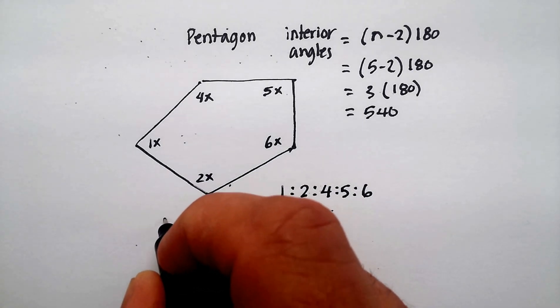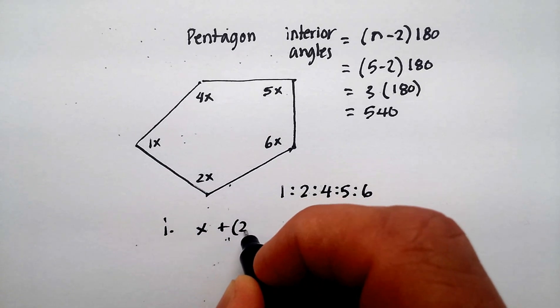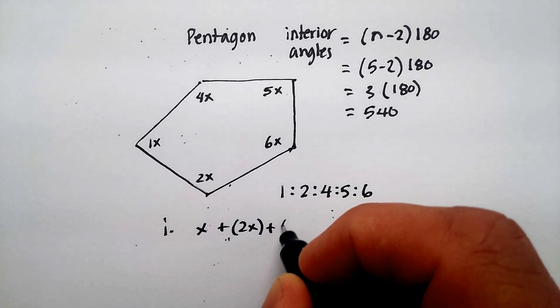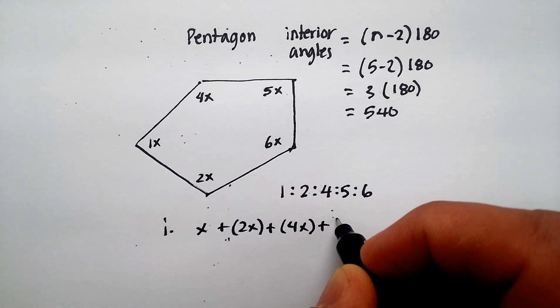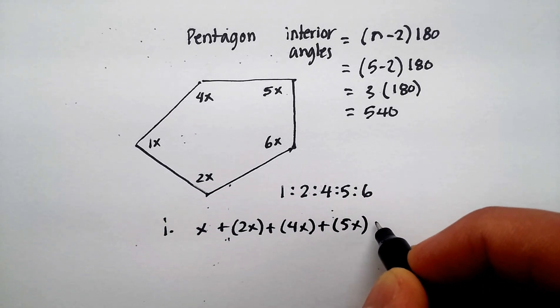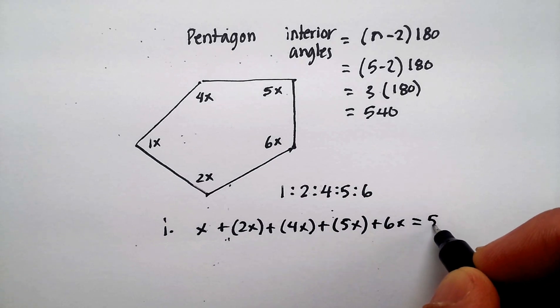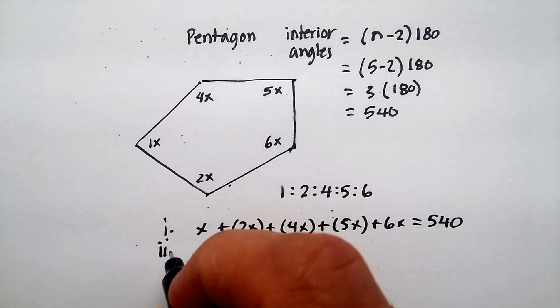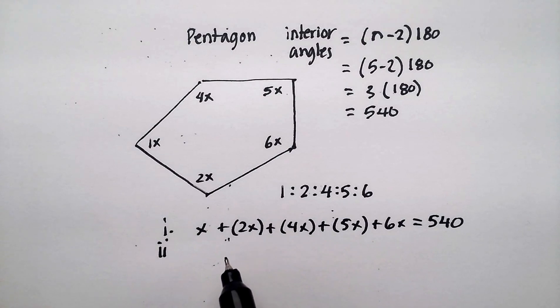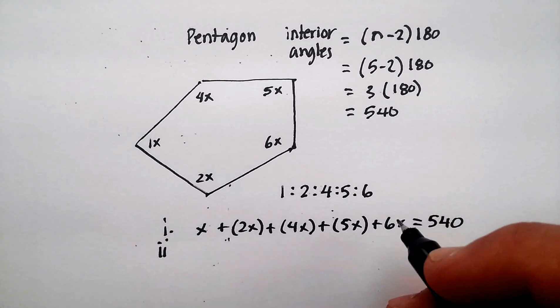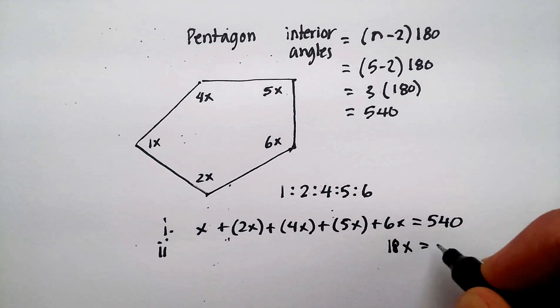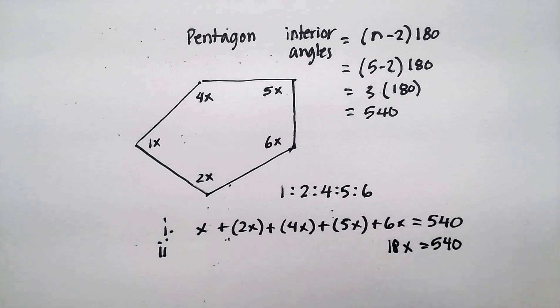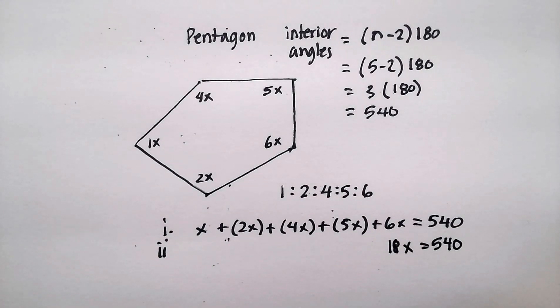So I'd say, first step, x plus 2x plus 4x plus 5x plus 6x is equal to 540. Step 2, let's go ahead and add up all our like terms. It gives me 3, 7, 12, 18. 18x is equal to 540.